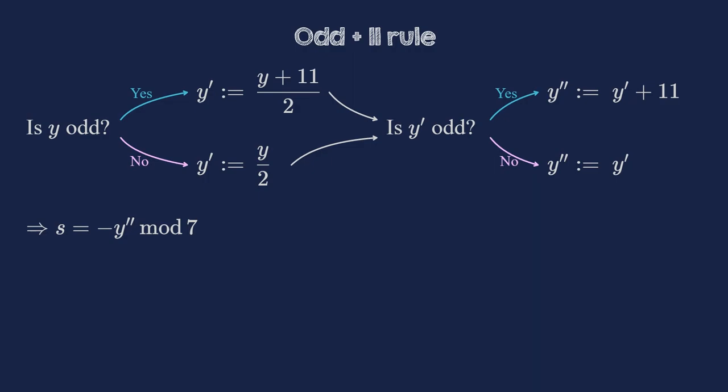As an example, let's look at the year number y equal 97 from before. First, it is odd. So we get y prime as 97 plus 11 divided by 2. So 108 divided by 2, which is 54. This is even, so we keep it. Mod 7 is the same as minus 2, as 56 is divisible by 7. So the shift s we want is minus minus 2, which is 2. If you do this a couple of times, you will realize that it's much easier than the direct formula, because you only have to divide by 2 instead of 4. Moreover, you don't add the result of the division back to the original year number, which makes the numbers smaller and the following mod 7 step easier. So, while it might have more individual steps, this odd plus 11 rule is, on average, easier to do in your head. I won't prove here that this rule gives the same result as y plus y divided by 4, but you can find an archive link to Fong's and Walters' paper in the doobly-doo.